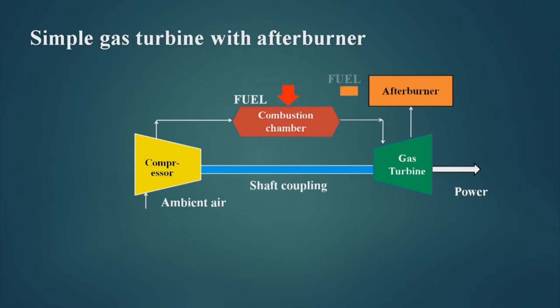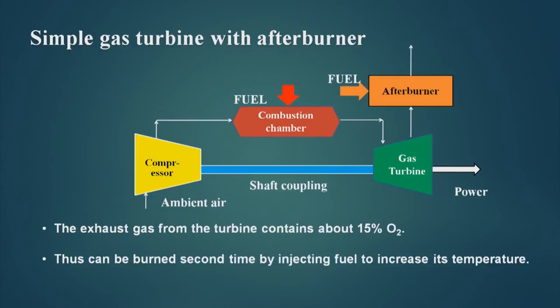Another type of gas turbine has an after burner. The concept is that if the temperature of the exhaust gas from the gas turbine is low, we can increase its temperature using an after burner. We are trying to regulate the hot flue gas temperature using different techniques. One technique uses the recuperator to bring down the temperature of the hot flue gas while increasing efficiency and decreasing fuel consumption. If we want to increase the hot flue gas temperature, we can use the after burner. The exhaust gas from the turbine contains about 15 percent oxygen, so we can add fuel to it and re-burn it to increase the temperature of the exhaust gas.